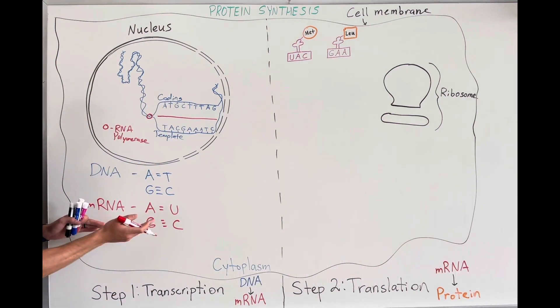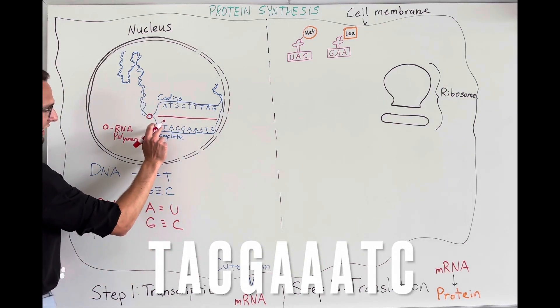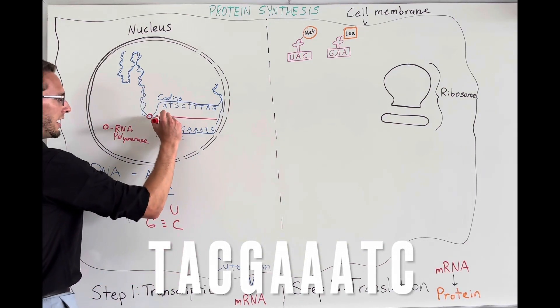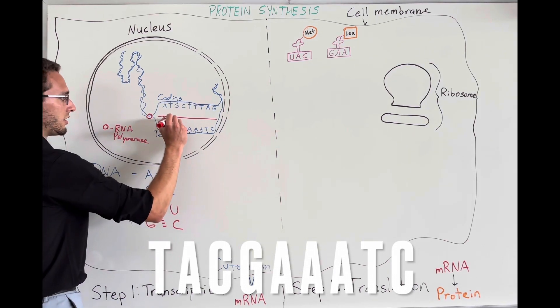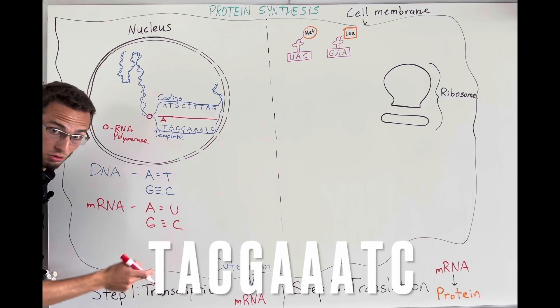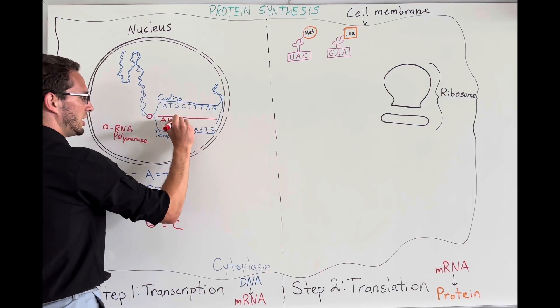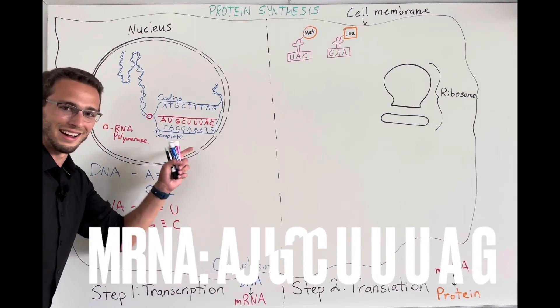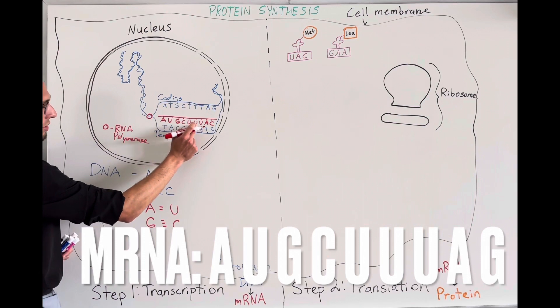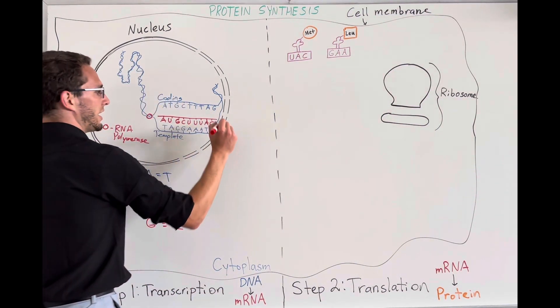All right? So now that we have this code, let's see if we can actually transcribe it. Step one. So T will like to go with A. So that will be our first letter of our RNA. A will like to go with U, remember, because this is mRNA. C will like to go with G. And then I'm going to finish it out and see if you can get it right. So I've got AUG, CUU, UAG. Here's our mRNA strand right here.